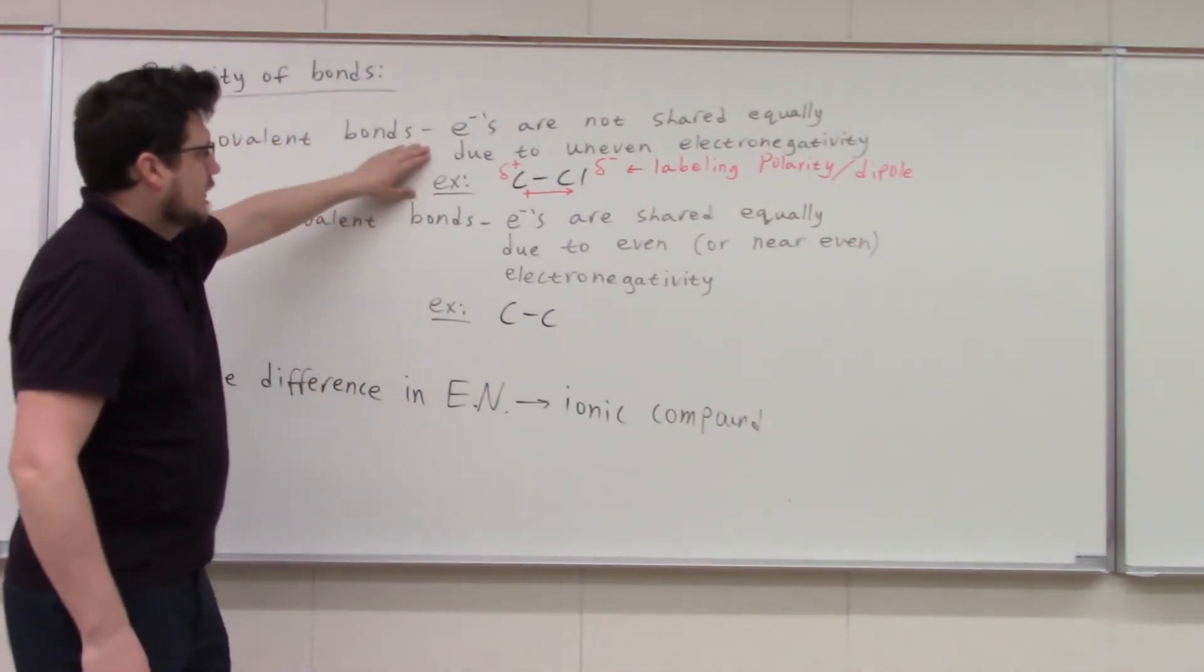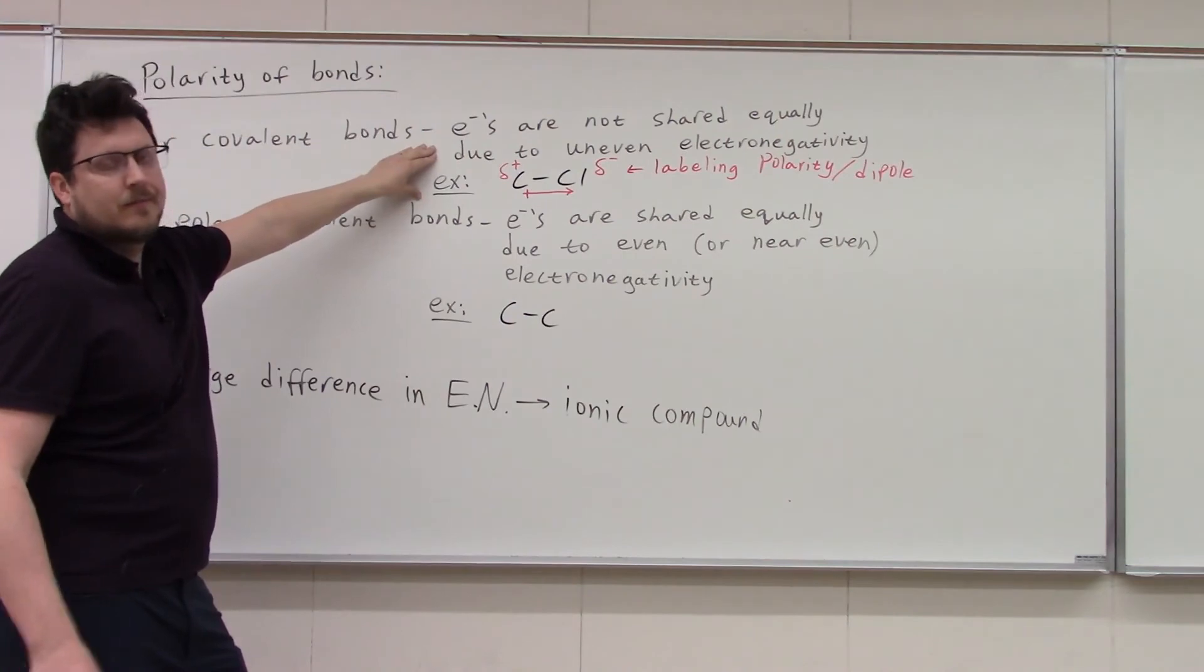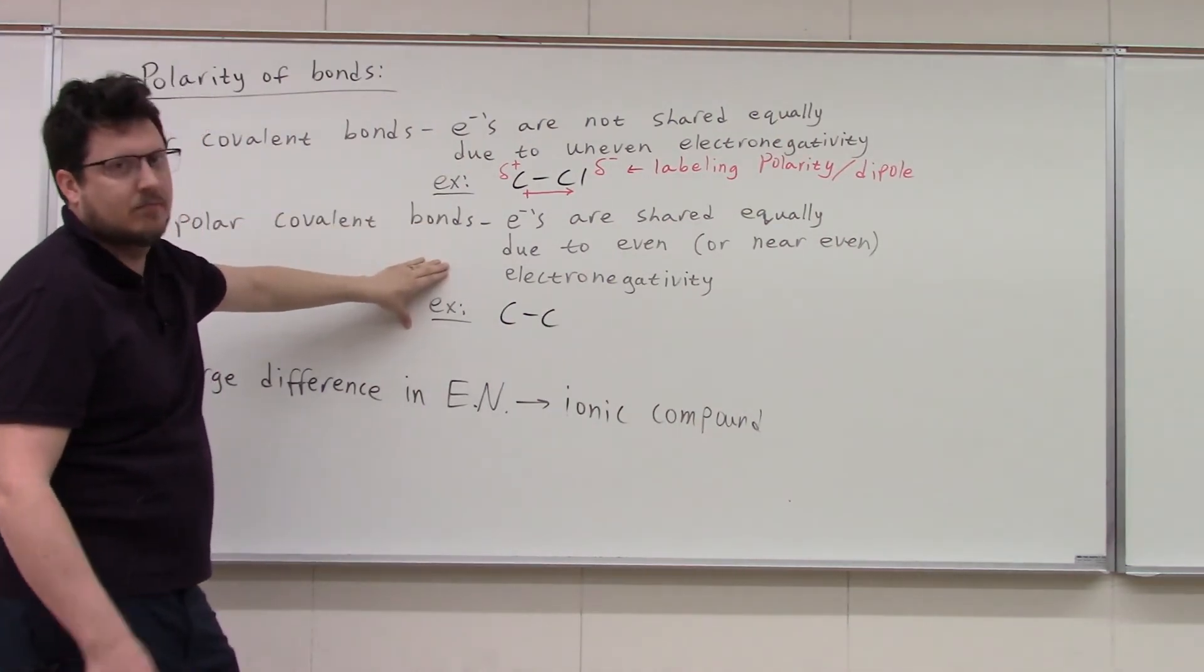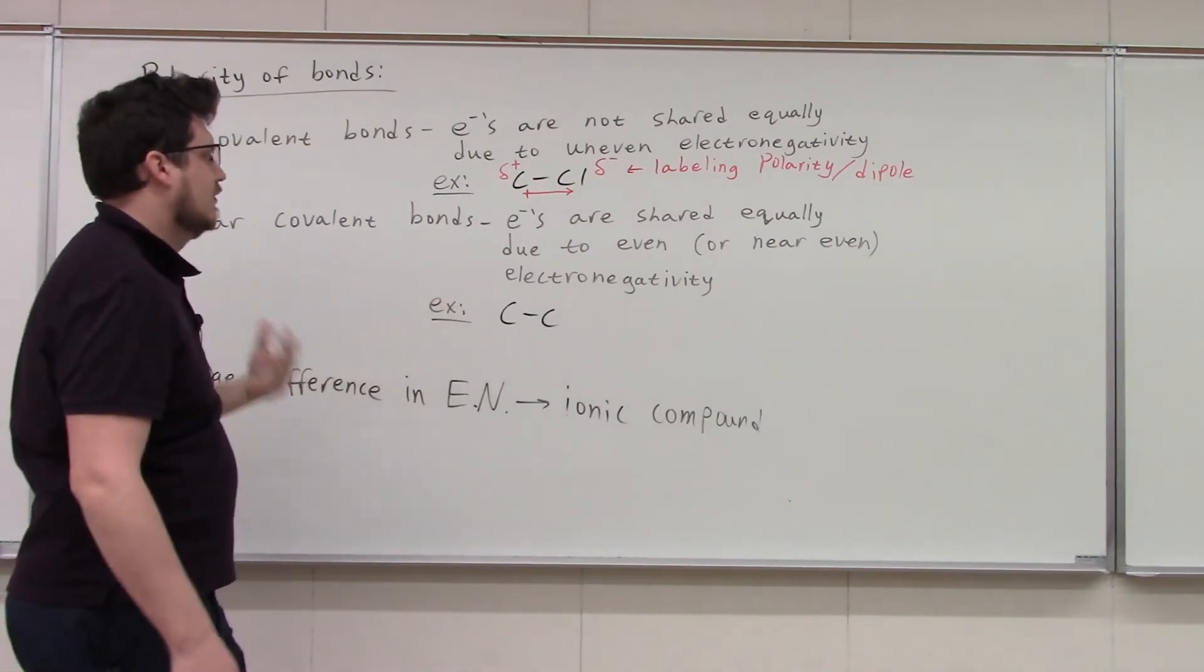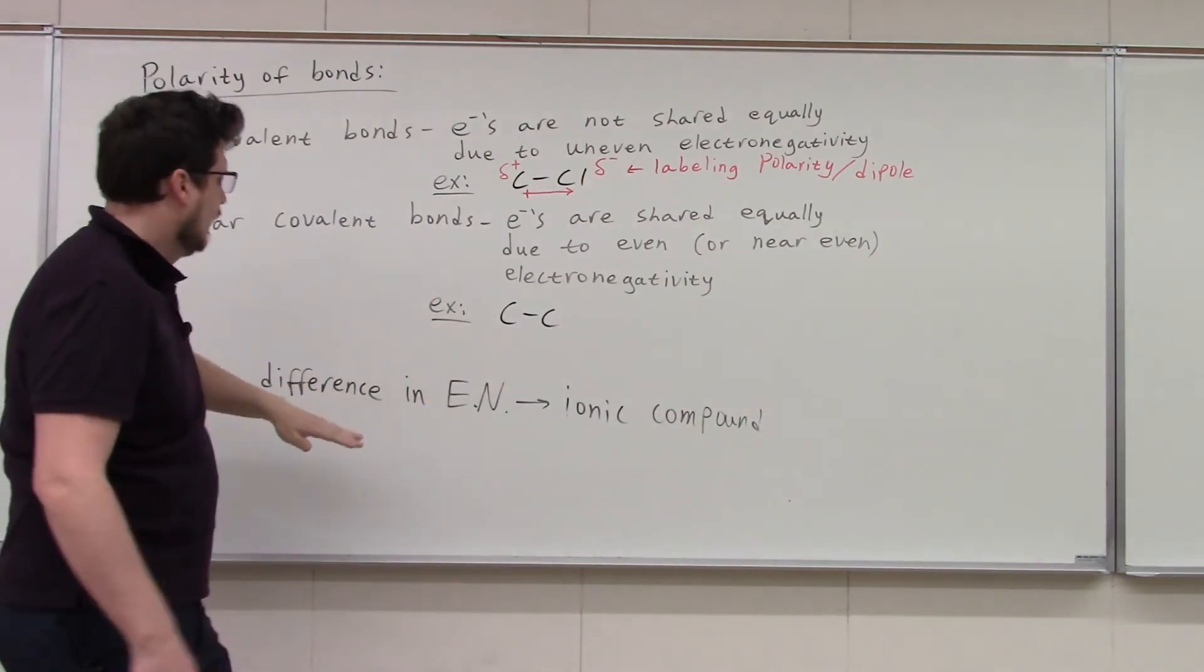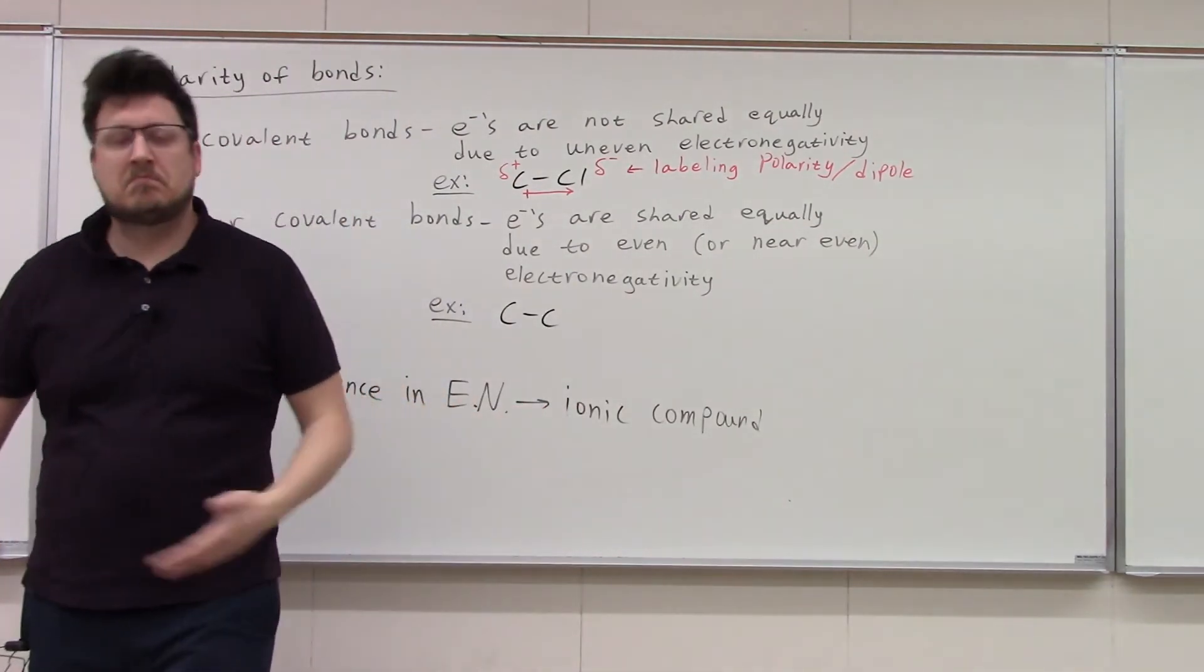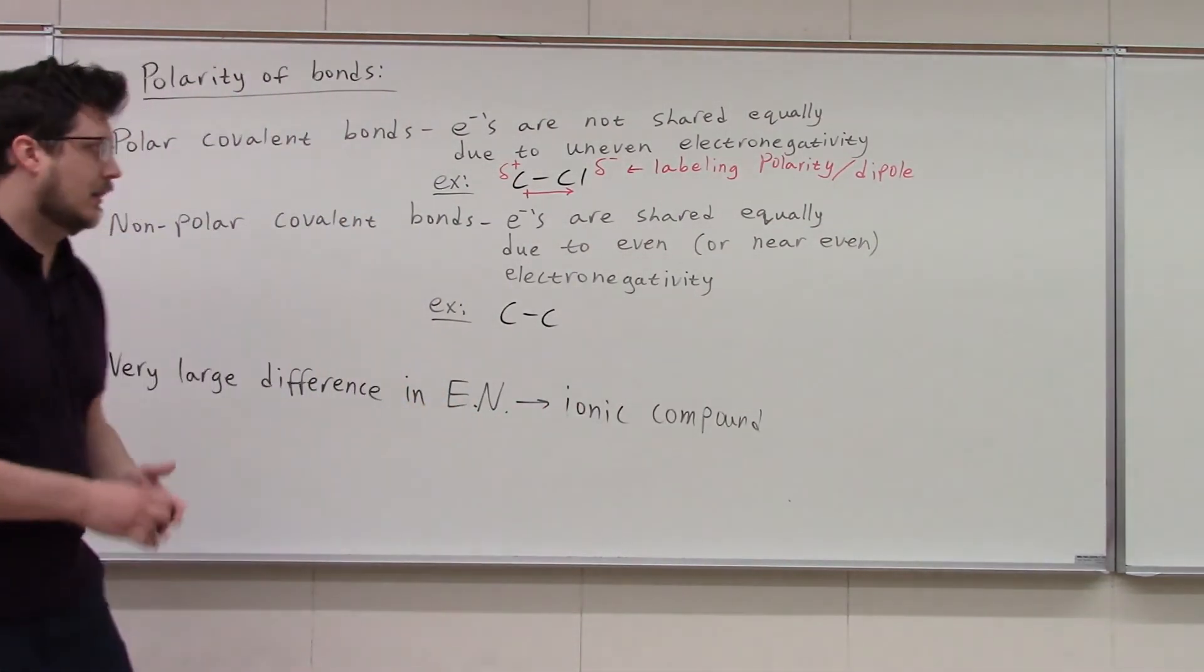But in general, mismatched non-metals, polar. Matching non-metals, non-polar. Every now and again, you'll see carbon and hydrogen. That's typically non-polar too. And then if you see a metal and non-metal, you get a big difference, ionic. That's what we're looking at here.